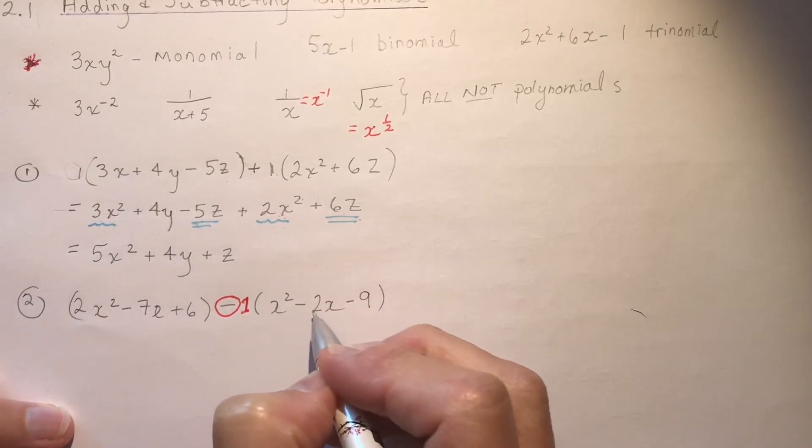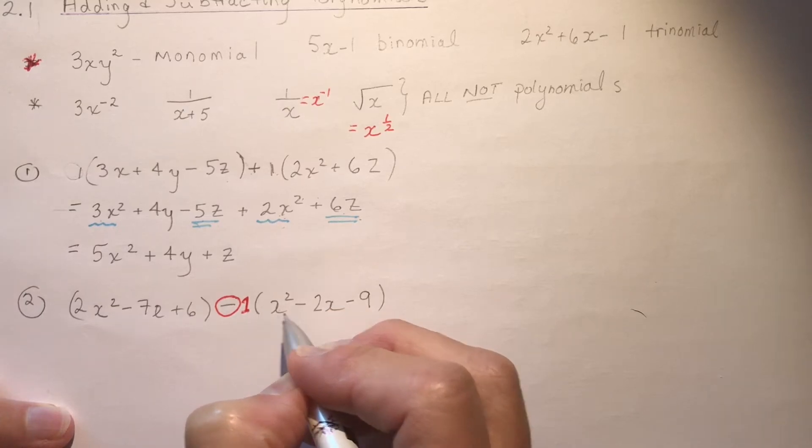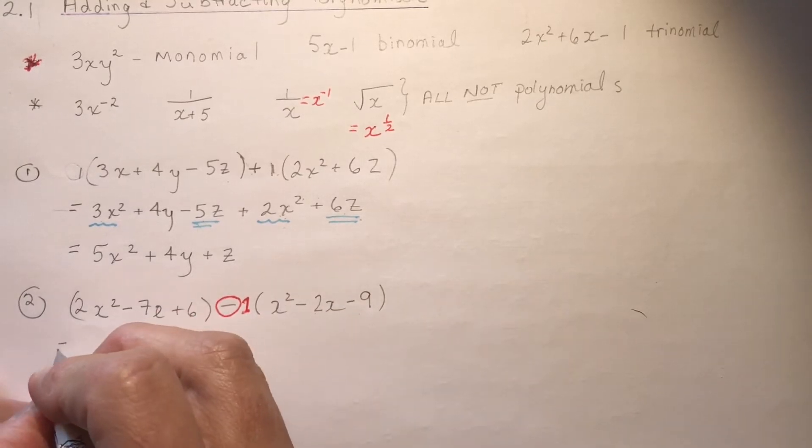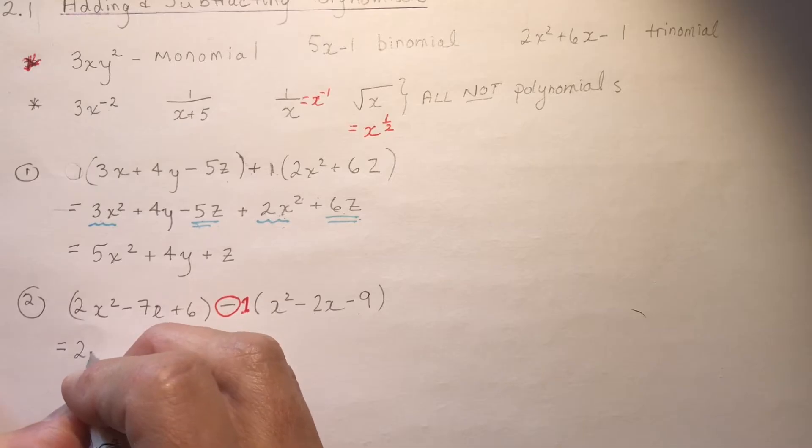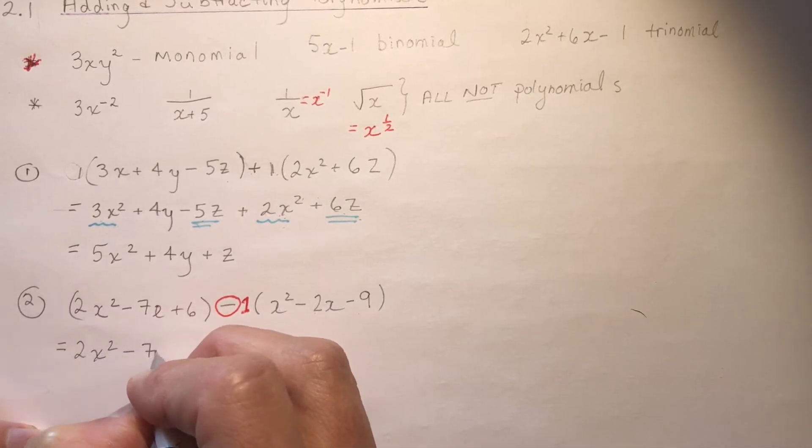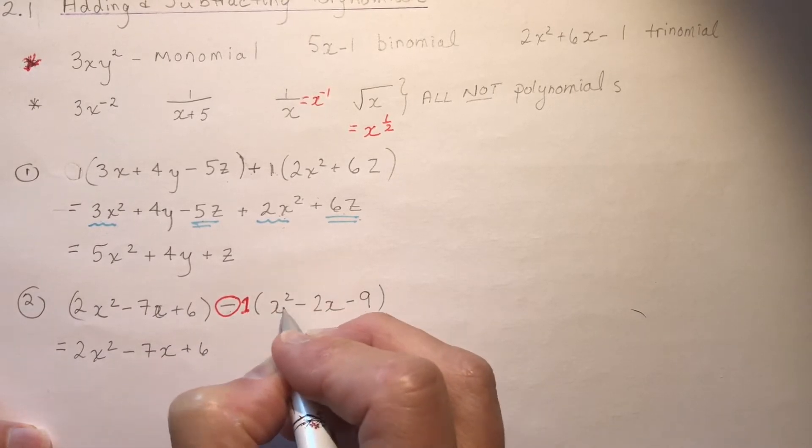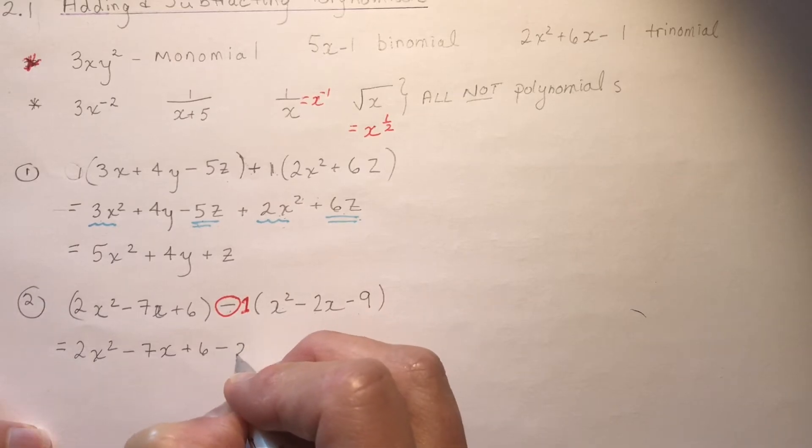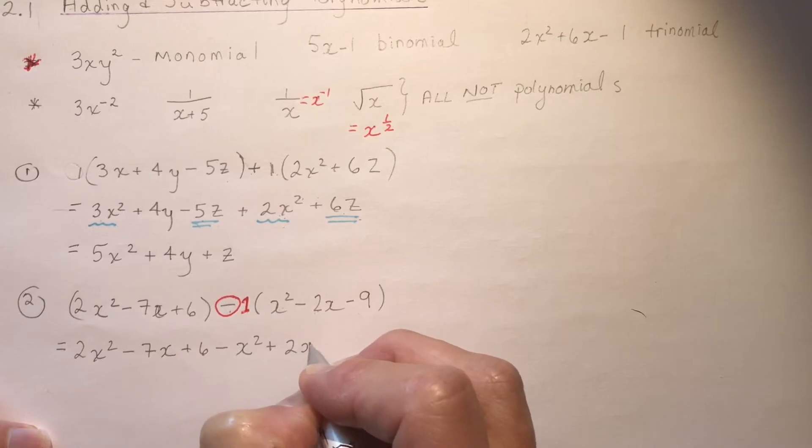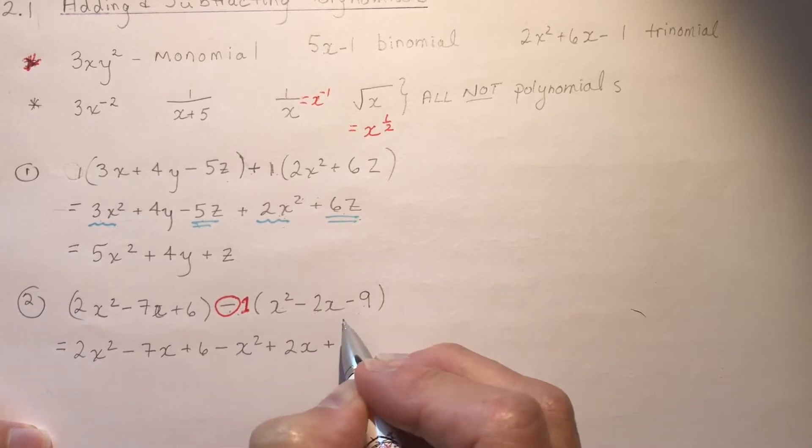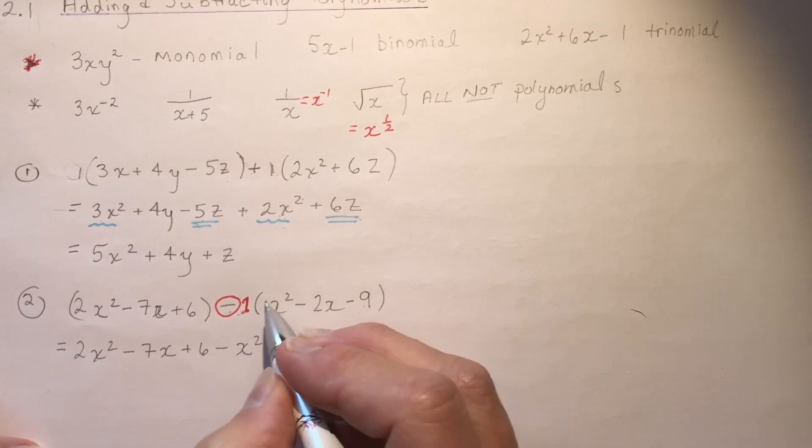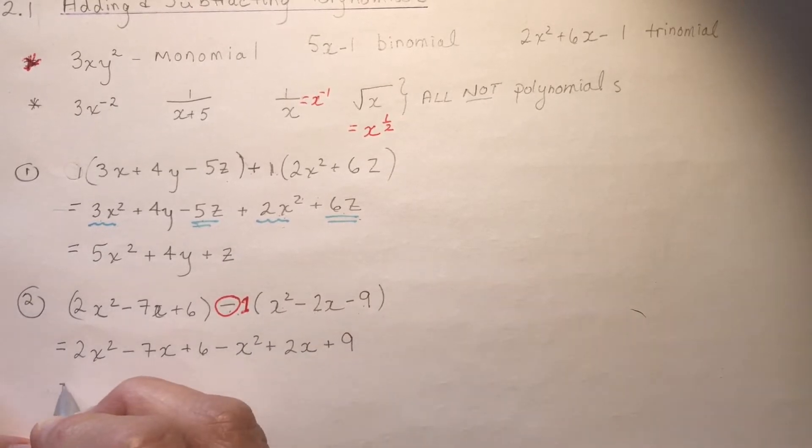I have to change the sign. I'm multiplying. This is minus 1 times everything in this bracket. So don't forget your equal signs as you go from line to line. 2X squared minus 7X plus 6. Now minus 1 times X. A negative times a positive is a negative. A negative times a negative is a positive. And a negative times a negative is a positive. So obviously, if you had missed this minus 1 times what's in the bracket, you would have made a lot of mistakes.